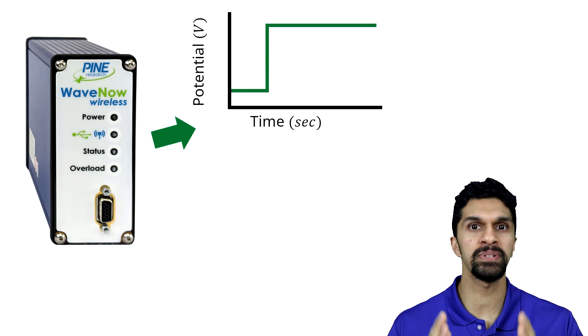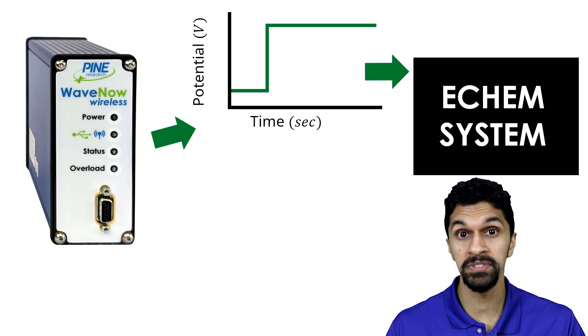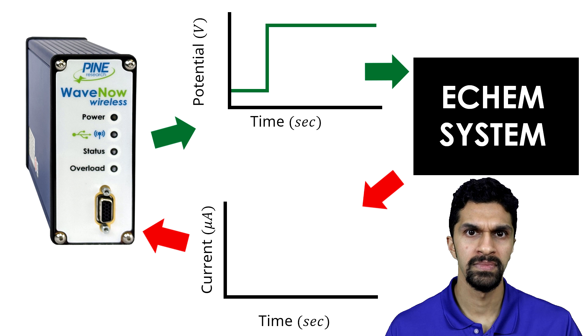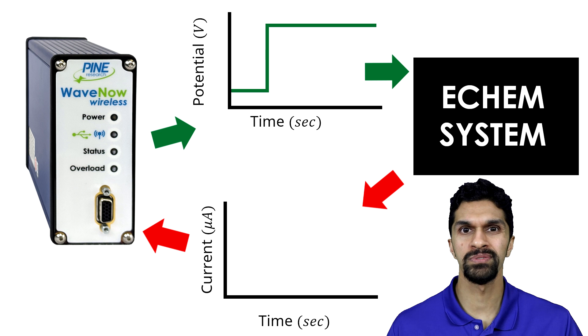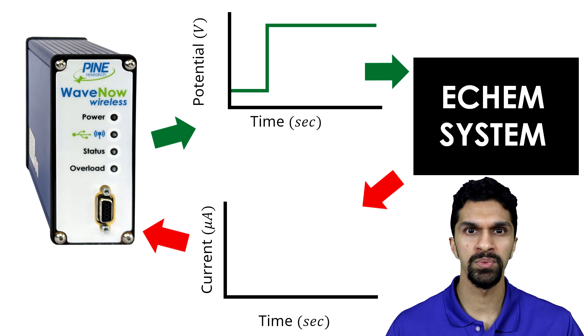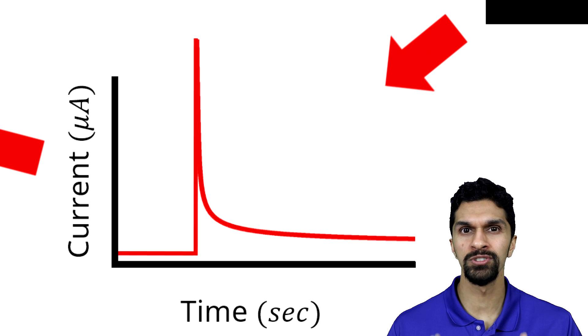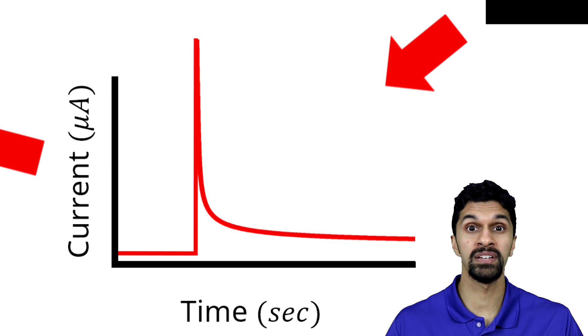Chronoamperometry is an electroanalytical chemistry technique where a potentiostat applies a step potential to an electrochemical system and we measure the current response as a function of time. In a typical three-electrode system with a redox-active analyte, we observe a spike in the current followed by a gradual decay. This is the shape of a typical chronoamperogram.